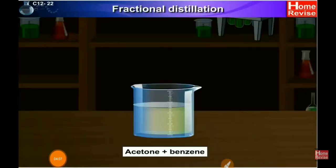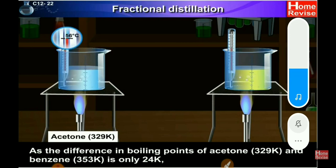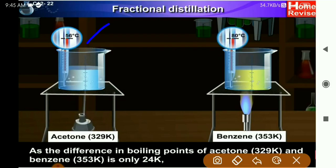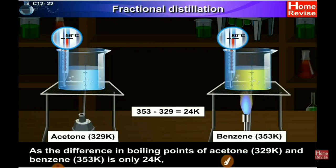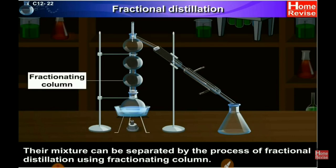Separation of acetone and benzene: the boiling point of acetone is 329 Kelvin and the boiling point of benzene is 353 Kelvin. The difference in their boiling points is only 24 Kelvin, so their mixture can be separated by the process of fractional distillation using a fractionating column.